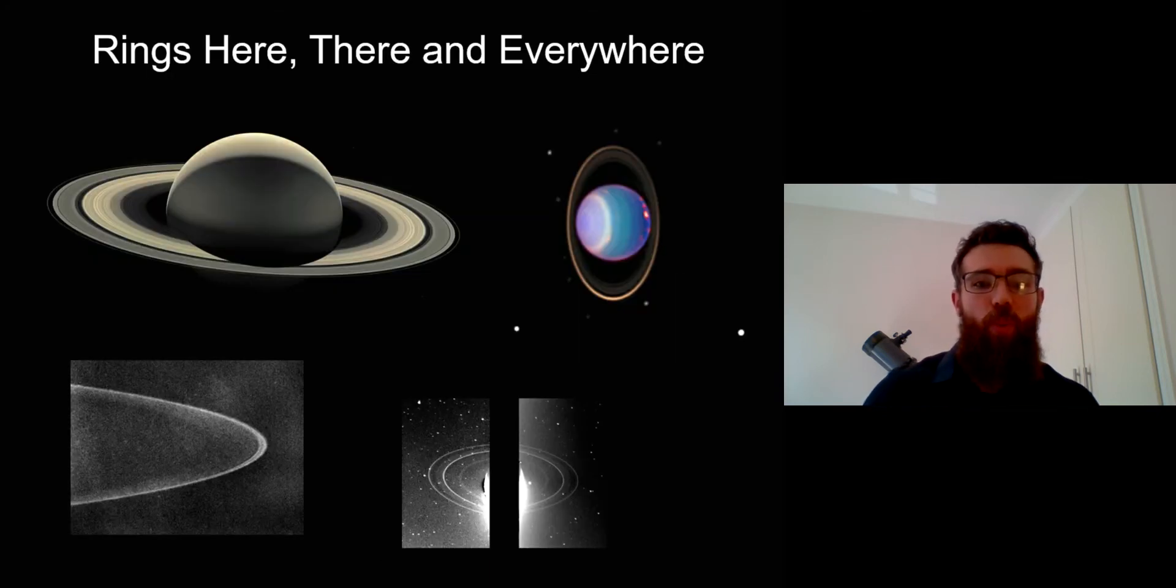We know Saturn has a very significant ring system that you can see in your back garden with a fairly small telescope. But many of the other planets actually have rings as well - Jupiter, Uranus, and Neptune all have these planetary rings. They're not as large as Saturn's and they're not as easy to see with a small telescope.